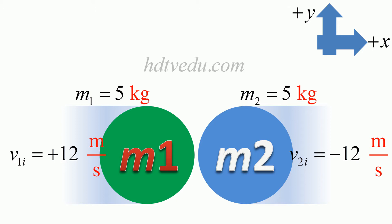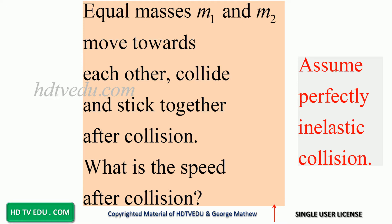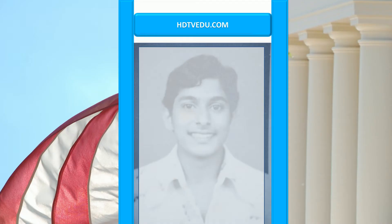So 5, 12, 5, negative 12. Equal masses m1 and m2 move towards each other, collide and stick together after collision. What is the speed after collision? This is a perfectly inelastic collision.